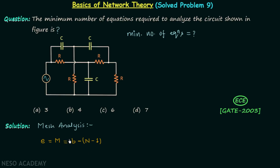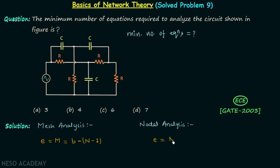This is the formula for minimum equations using mesh analysis. But when you read the question, nowhere is it written that we need to find the minimum number of equations for mesh analysis specifically. Therefore, to get the correct answer, we also have to check the number of equations required for nodal analysis. In the first lecture on nodal analysis, I gave the formula: minimum number of equations E equals the number of principal nodes minus 1.